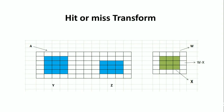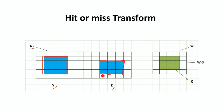So here we have an image A. Within this image A, we have two regions: Y and Z. The Y region is of size 3 by 4, and the Z region is of size 3 by 3.